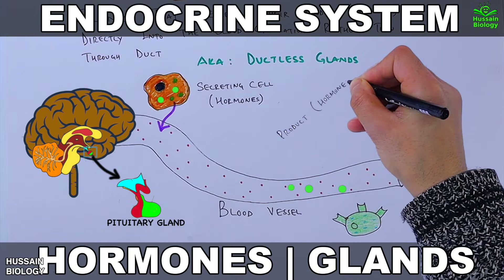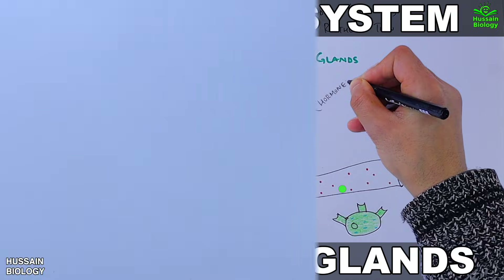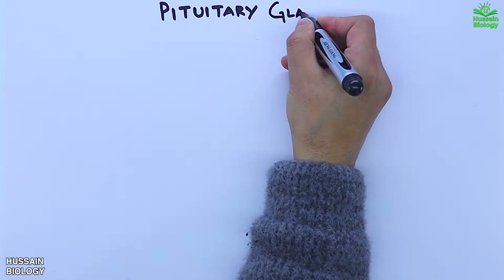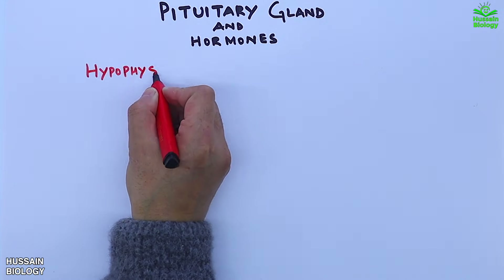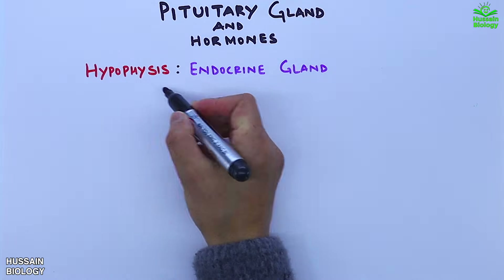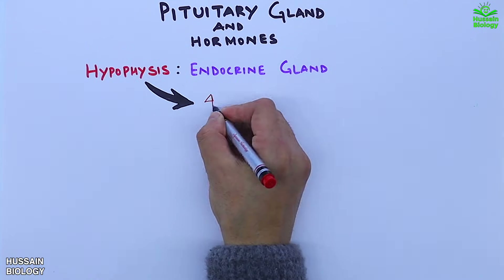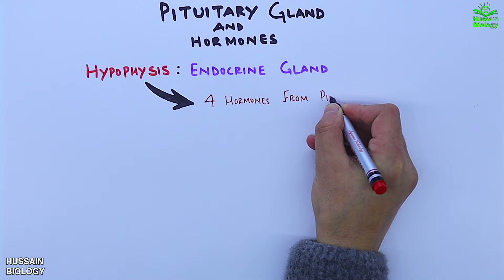In the previous video of the endocrinology video series we discussed about the endocrine system and its glands. Now in this video we'll be discussing about the pituitary gland. The pituitary gland, also known as the hypophysis, is an endocrine gland.